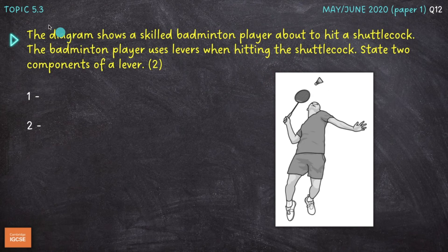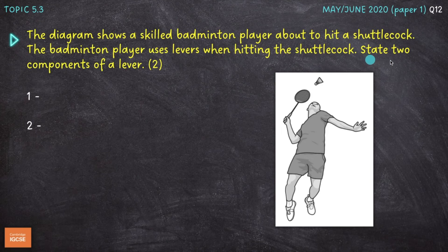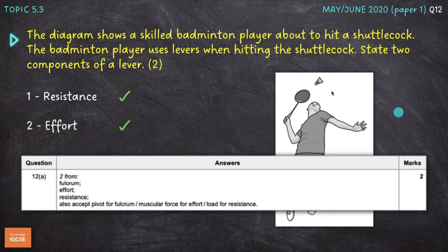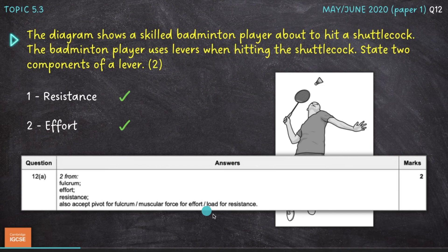Question number two is on topic 5.3. The diagram shows a skilled badminton player about to hit a shuttlecock. The question asks: state two components of a lever, for two marks — a very easy two marks. There are three components to a lever: fulcrum, resistance, and effort. I've got two marks here for resistance and effort. You could have written pivot instead of fulcrum, muscular force instead of effort, and load instead of resistance.